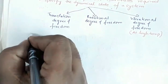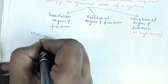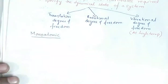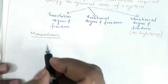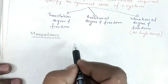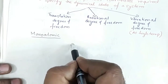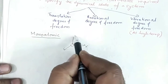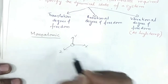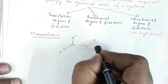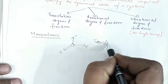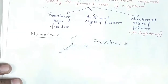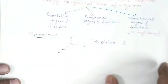Now let us see the case of a monoatomic gas molecule. A single atom can translate either along the x-axis, or along the y-axis, or along the z-axis. So corresponding to translation, there are three degrees of freedom.